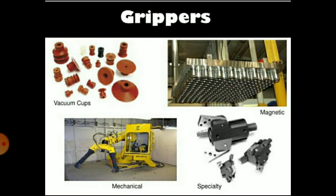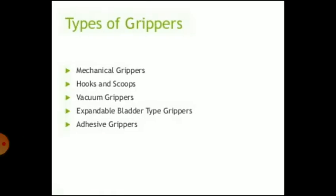There are various types of grippers including vacuum cups, magnetic grippers, mechanical grippers and special types. There are five categories of grippers: mechanical grippers, hooks or scoops, vacuum grippers, expandable bladder type grippers, and adhesive grippers.